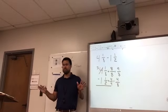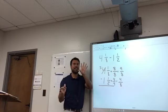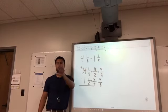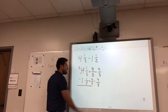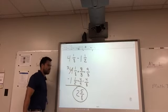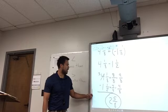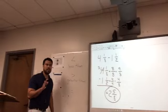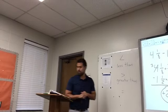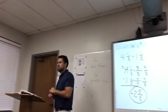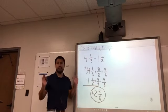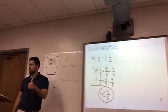Is four and one-eighth the same as three and nine-eighths? Yes — I changed the way it looks, not the value. Now: nine-eighths minus four-eighths is five-eighths, and three minus one is two. Positive or negative? Look at the original problem — the positive had the greater absolute value, so the answer is positive two and five-eighths. You don't have to write the positive sign; if there's no negative sign, we assume it's positive.